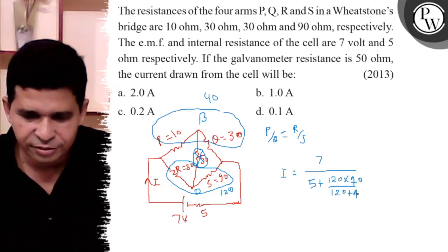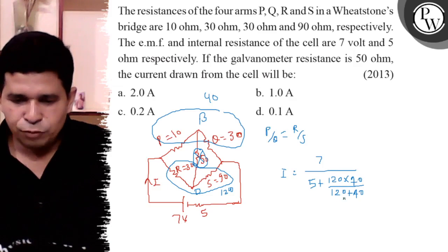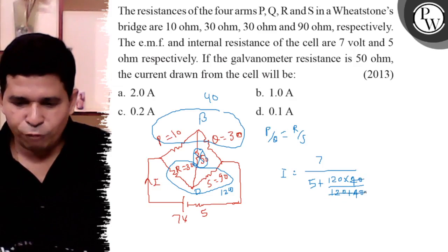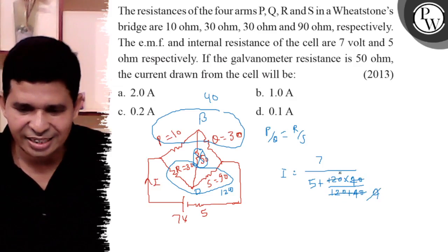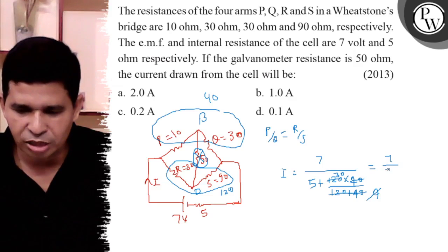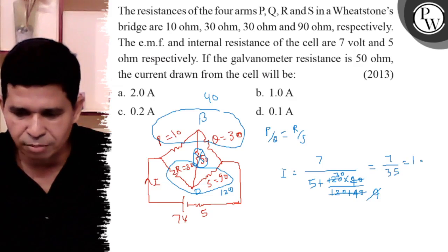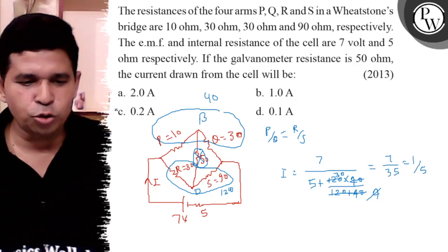So this is the final answer. Now the parallel resistance is 120 times 40 over 120 plus 40, which equals 30. So it's 7 divided by 30 plus 5, which is 7 over 35. So it equals 1 by 5, one-fifth means 0.2 ampere.